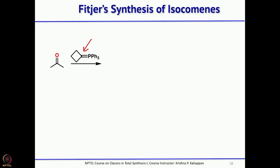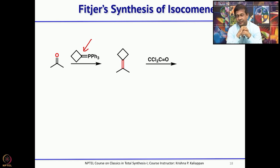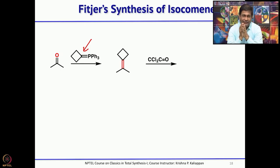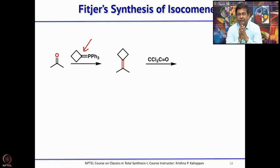The starting material for Fider's total synthesis is acetone — a simple solvent. A Wittig reaction with a cyclobutane-derived ylide gives the first intermediate. Then a [2+2] cycloaddition with dichloroketene gives the spirofused bicyclic system with 2 four-membered rings. In Paquette's synthesis there was an intramolecular [2+2]; here it is an intermolecular [2+2] with dichloroketene. Dichloroketene can be generated from dichloroacetyl chloride with triethylamine, or from trichloroacetyl chloride with zinc.